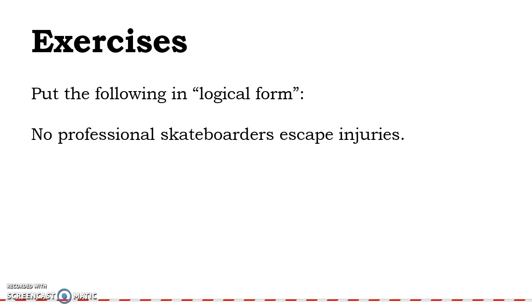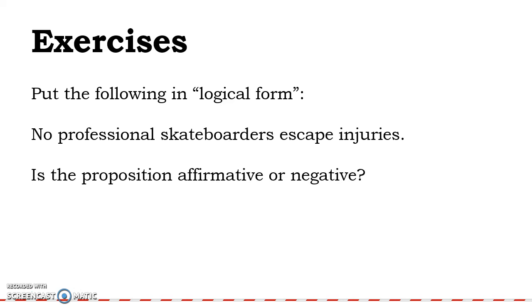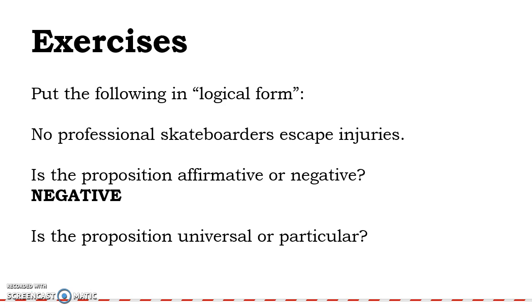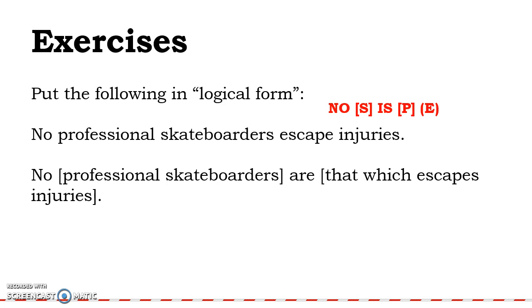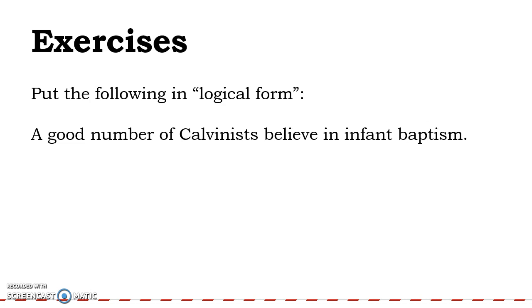Put the following in logical form: 'No professional skateboarders escape injuries.' Is the proposition affirmative or negative? We have the word 'no' there, so it's negative. Is it universal or particular? I'm talking about the whole class of professional skateboarders, so it's universal. Negative universal — that's our E proposition: No S is P. The subject term works out nicely. For the predicate, we apply our rule: whenever we have a verb in the predicate, we tag 'that which' to the beginning. Final form: 'No professional skateboarders are that which escapes injuries.'